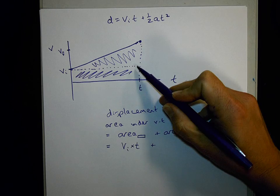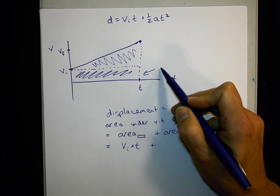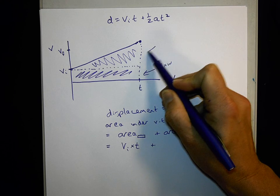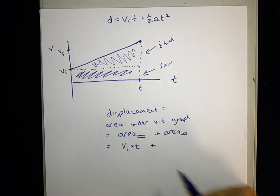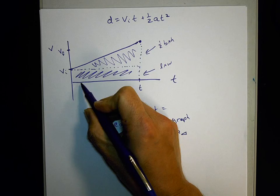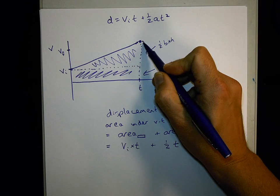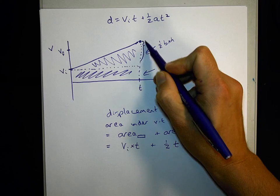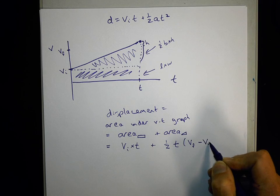The second area is a triangle, 1/2 base times height. So while the area of a rectangle is length times width, the area of the triangle is 1/2 times base times height. So the triangle area is 1/2, the base looks to be t seconds. The height is this difference here, so I'd have to say v_f minus v_i is the height.